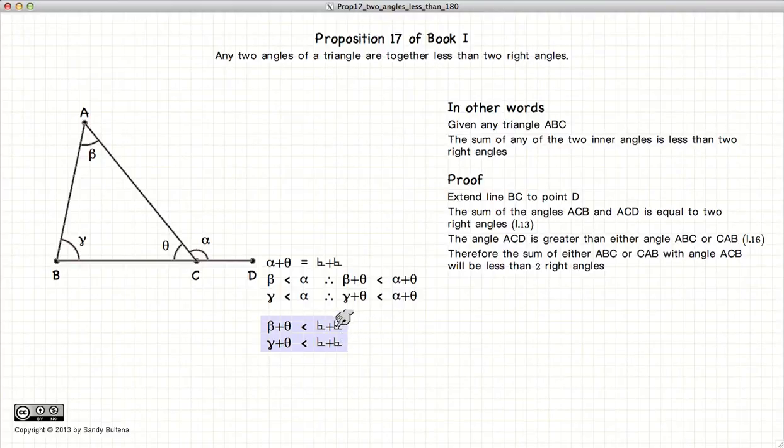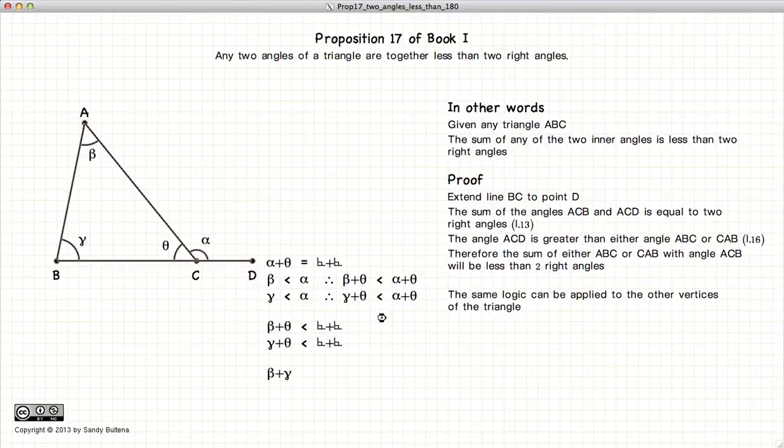Now using the same logic with a different side of the triangle, we can demonstrate that beta plus gamma is less than two right angles.